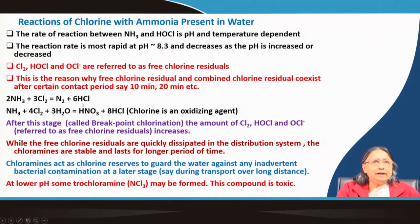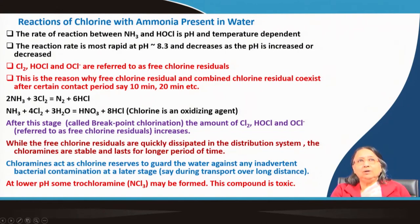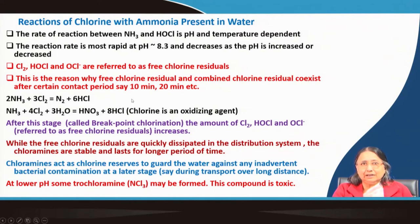Other reactions can also happen. Chlorine, being an oxidizing agent, can oxidize ammonia to nitrogen gas, or even to nitrate — the highest oxidation state. These oxidation reactions also occur at higher concentrations of chlorine.